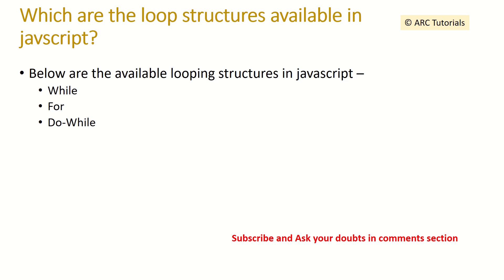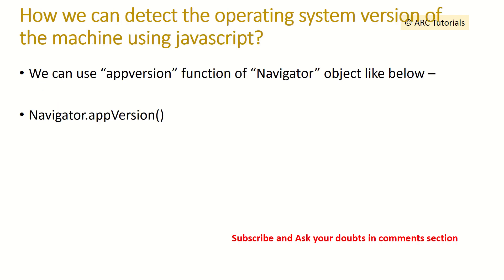What are the different looping structures available in JavaScript? The different looping structures available in JavaScript are the for loop, while loop, and do-while loop. These are exactly the same as you would be familiar with from any programming language.